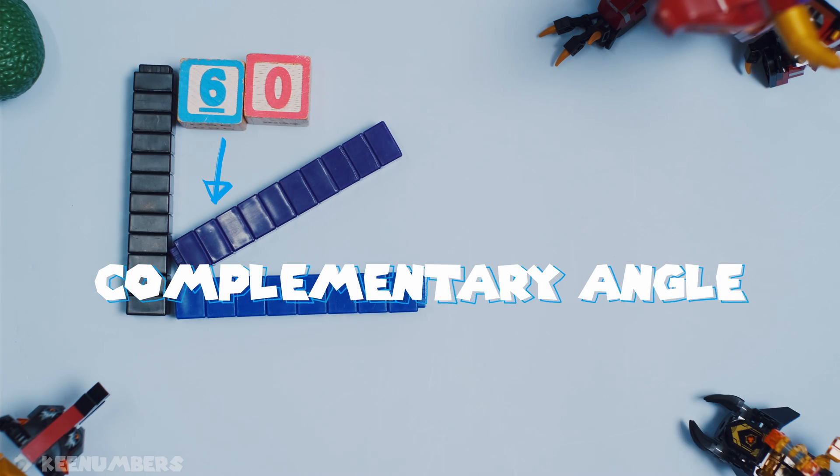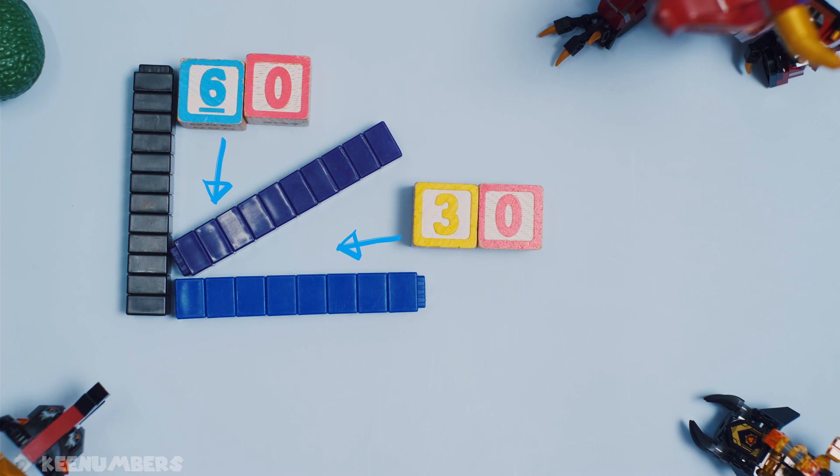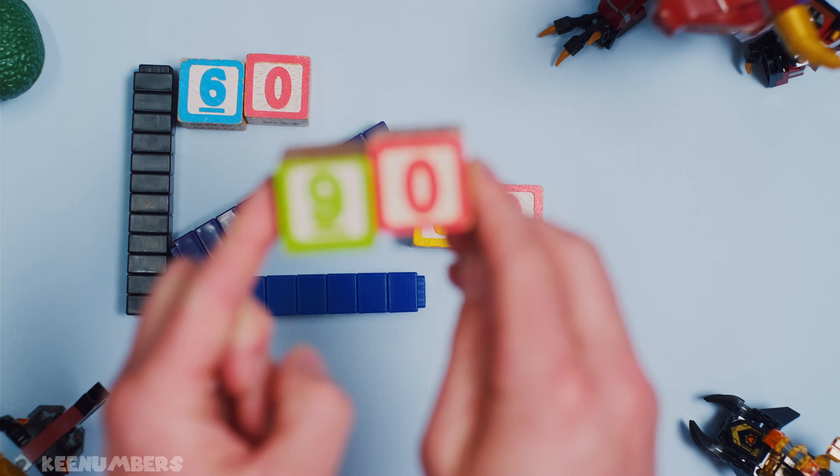So that when you add it to 30, you get 90. Why is this helpful?